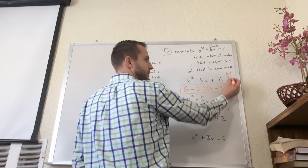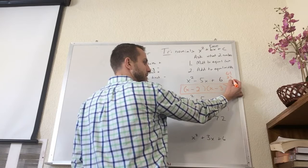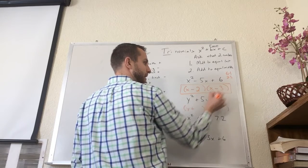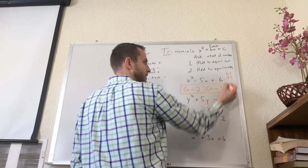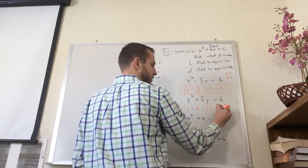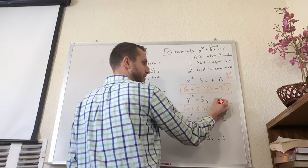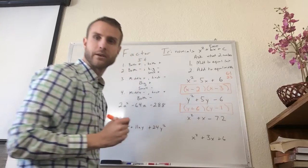Again, this is the same last number, so I can use these two. So if the bigger one is positive and the smaller one is negative, does 3 minus 2 equal 5? No. Does 6 minus 1 equal 5? Yes. So I use that, and that's my answer. 6 times negative 1 equals negative 6. 6 minus 1 equals 5.